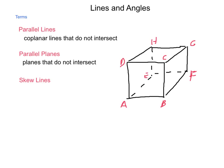Skew lines are non-coplanar lines that do not intersect. For example, if we took CD and FG, these do not exist in the same plane and they would never intersect one another. This becomes the basis of the items we're going to discuss in this unit, along with other types of lines that come into play.